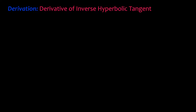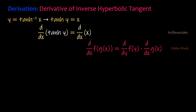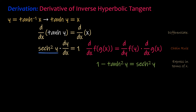Derivation of the derivative of the inverse hyperbolic tangent function. Let y equal the inverse hyperbolic tangent of x, which means that the hyperbolic tangent of y is equal to x. Take the derivative with respect to x of each side of the equation. Apply the chain rule as in the previous derivation. The derivative of the hyperbolic tangent of y is the square of hyperbolic secant of y. Afterwards, express the square of hyperbolic secant of y in terms of x. Use a hyperbolic identity to express hyperbolic secant of y in terms of hyperbolic tangent of y.